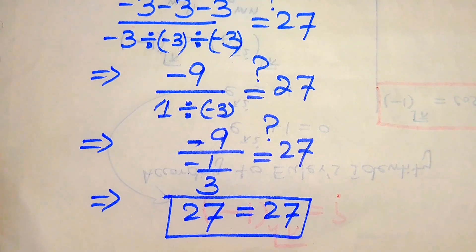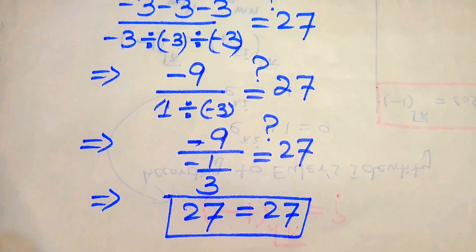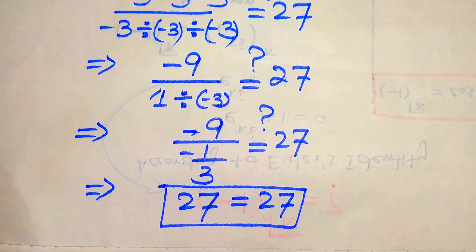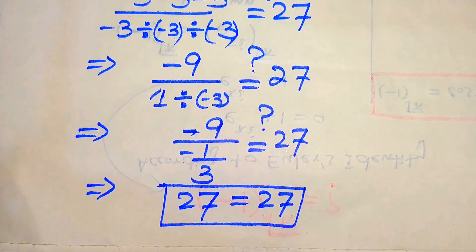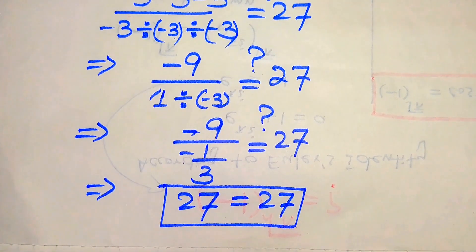So these are the two values of C, and these are the two solutions of the given equation. This is the final answer. Thank you so much for watching this video — please subscribe to my channel for more exciting videos.